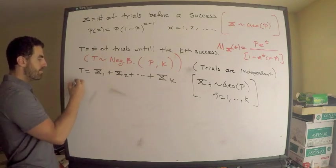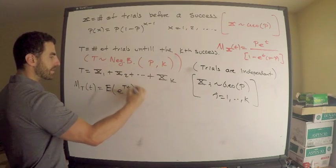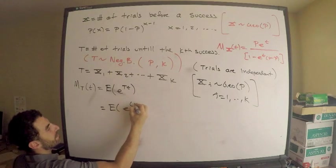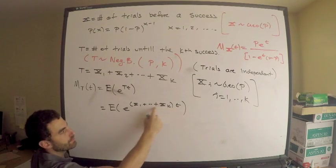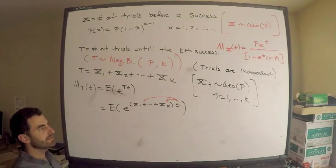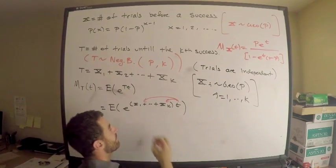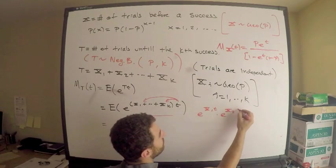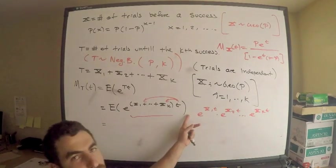I'll use the fact that these Xi's are independent. The moment generating function of capital T is, by definition, the expected value of e to the capital T times little t. Now substitute what T is: this is the expected value of e to the X1 plus X2 plus all the way up to Xk, times little t. Distribute little t through, then use independence. This inside equals e to the X1 times t, times e to the X2 times t, all the way up to e to the Xk times t.